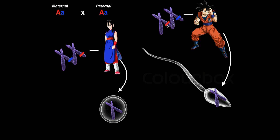What we can do is use a monohybrid cross, also known as a Punnett square, to predict what genotypes the possible offspring will have. We can also use that data to figure out the possible phenotypes. So we're going to consider a maternal who is a heterozygote, meaning she has big A and little a, and a paternal who is also a heterozygote, big A and little a.